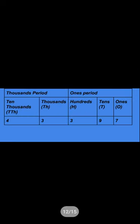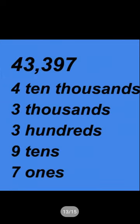We can write this in a place value chart. 4 goes in the 10,000s place, 3 in the 1000s place, 3 in the 100s place, 9 in the 10s place, and 7 in the ones place. So 43 is in the 1000s period and 397 is in the 1s period. That gives us: 4 ten-thousands, 3 thousands, 3 hundreds, 9 tens, 7 ones.